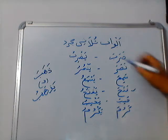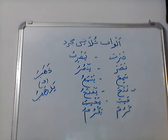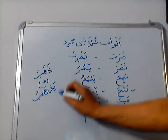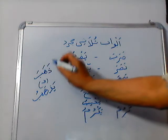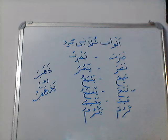These are Feli Mazi and these are Feli Muzare. An important point is that Feli Muzare is for both present as well as future. It will be known from the context of the sentence whether it is present or future. So Yadhhabu is for both — it means 'he goes' or 'he will go.' Zahabha means 'he went.' This point should be remembered.